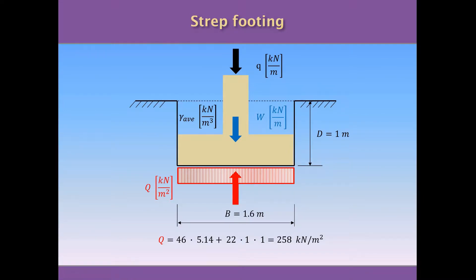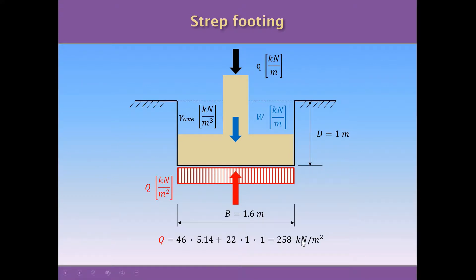The calculation we are going to do is to compare the external loads from the building — variable and permanent — plus the self-weight of the foundation against the bearing capacity. The bearing capacity Q equals 46 kN/m² (cohesion) times Nc (5.14), plus gamma (22 kN/m³) times depth (1 m) times Nq (1). Operating this gives a bearing capacity of 258 kN per square meter.